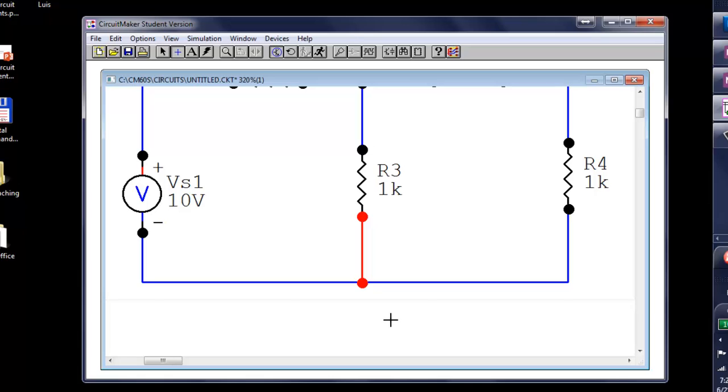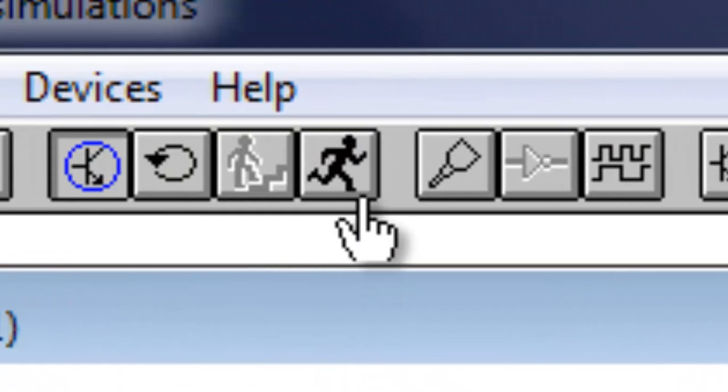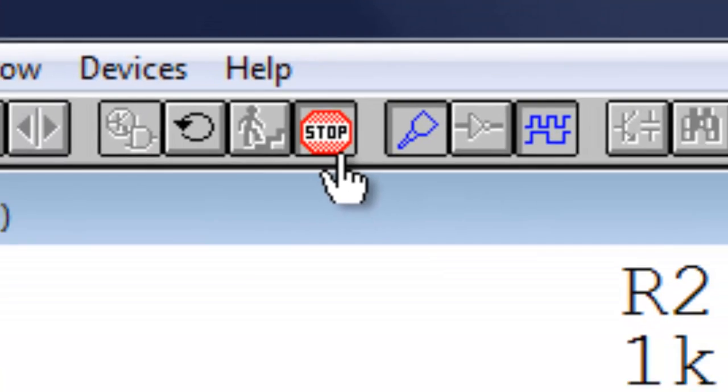To set a reference node, click on the zero key and set that reference symbol on the canvas, near the node that you want to make your reference. Wire the symbol to the chosen node and we are ready for the simulation. Do you see this little running man up here? Click on it to run the simulation.